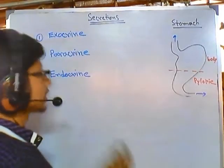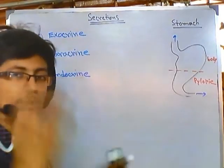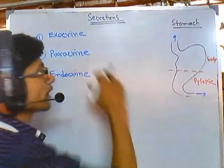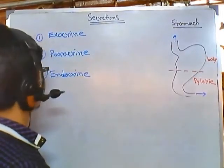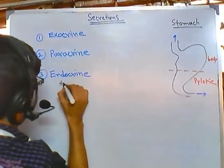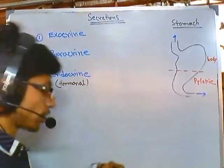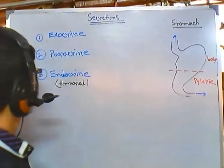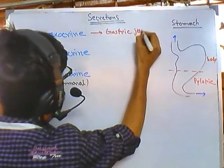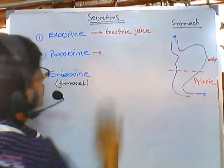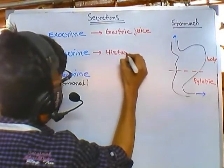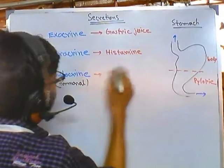Exocrine secretion means the cells are secreting directly outside. Paracrine signaling means they are secreting molecules regionally — to nearby cells. Endocrine secretion means something is secreted as a hormonal signal. The exocrine signaling from the stomach produces gastric juice. The paracrine signaling is by paracrine cells present in the stomach, and the molecule secreted in this case is histamine.